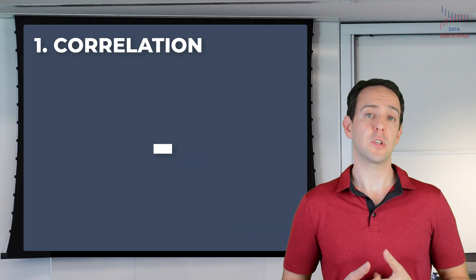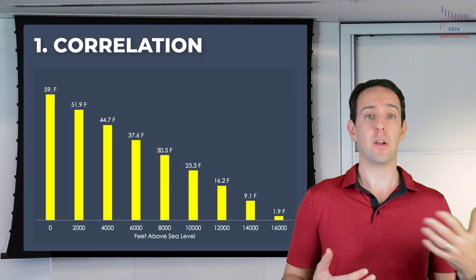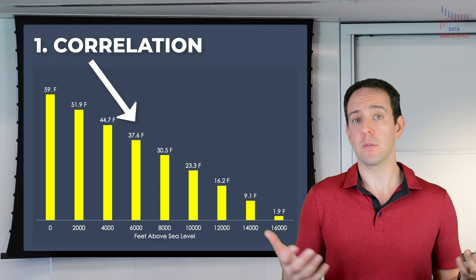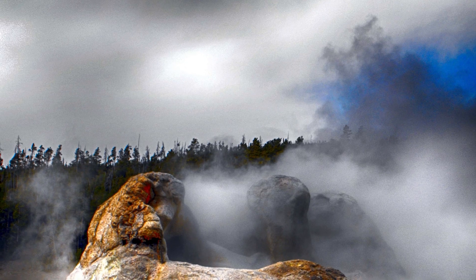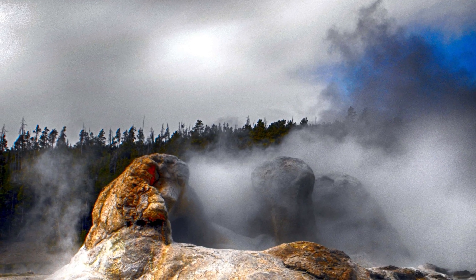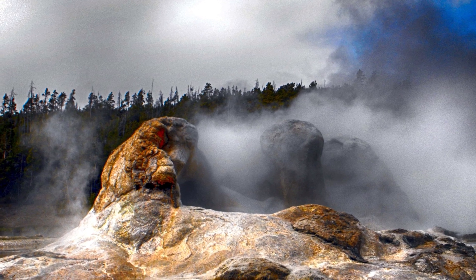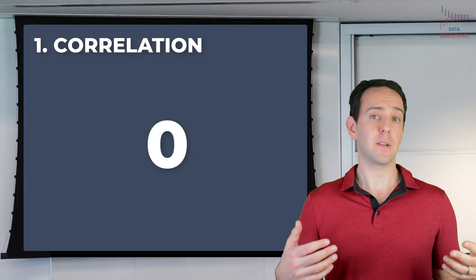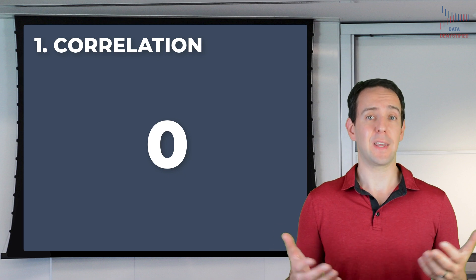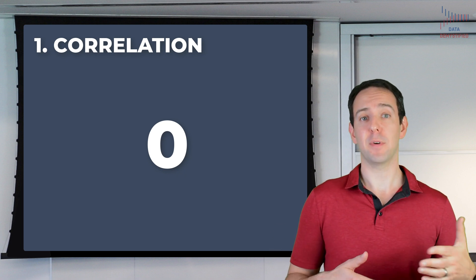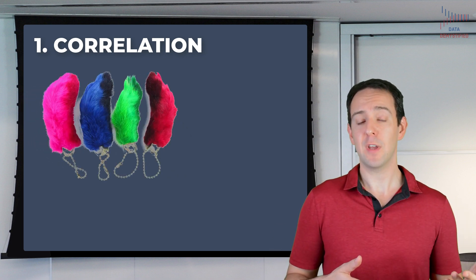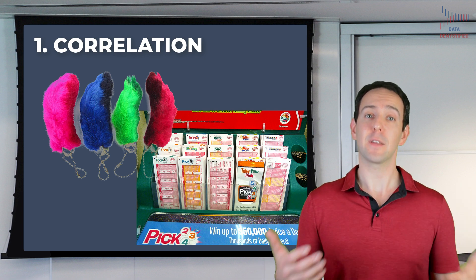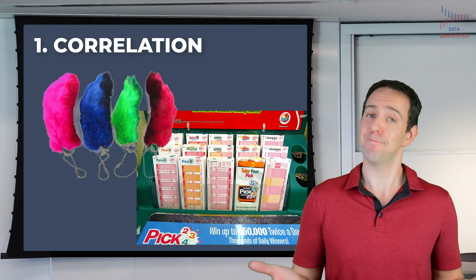On the other hand, a correlation can also be negative, like in the case of air temperature and elevation. As we go higher up a mountain, air temperature tends to go down. That's not to say that just being higher up means I'll be colder, but that does tend to be the case. And finally, a correlation can just be zero, like in the case of the number of times you rub your lucky rabbit's foot and how often you win the lottery. As much as you'd like those two to be related, sadly, they're not.